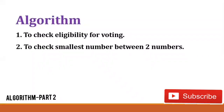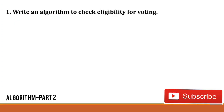Hello everyone. This is the second video of algorithm. In this video we are going to write an algorithm to check eligibility for voting and to check the smallest number between two numbers. In the previous video we discussed that while entering any value we use the read word in algorithm, and to display the result we use the display word.